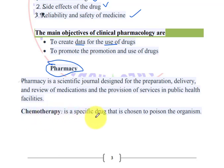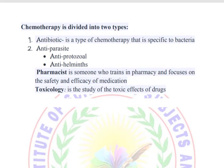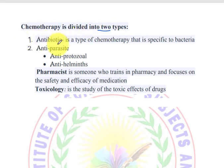A specific drug can be chosen to target or poison an organism. Chemotherapy is a very common type of drug. Many drugs cannot be used for everyone. Chemotherapy is divided into two parts: antibiotics and anti-parasites.